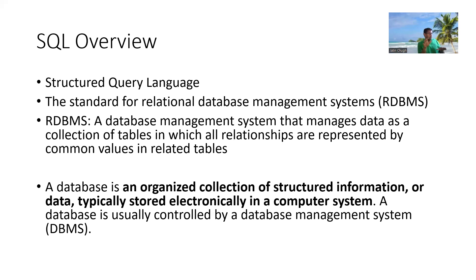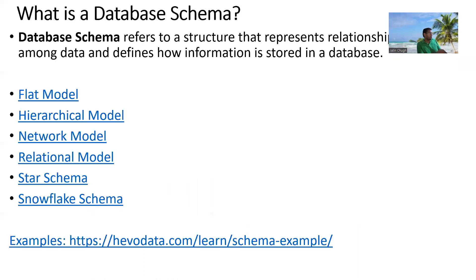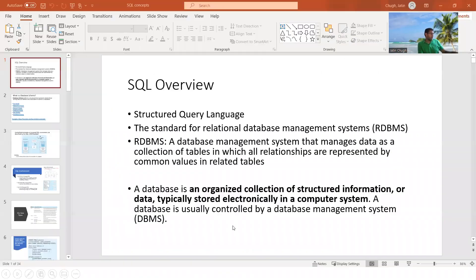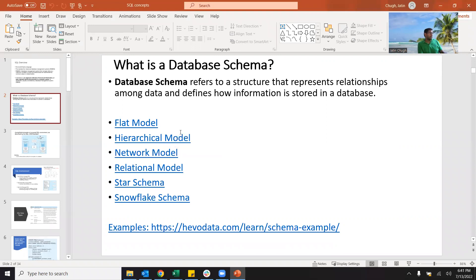So far, if everyone understands, let's move on. The schema I was talking about — all tables linked to each other follow a certain format. Those formats are: flat model, hierarchical, network model, relational, star schema, and snowflake. Let's look at what each of those means.